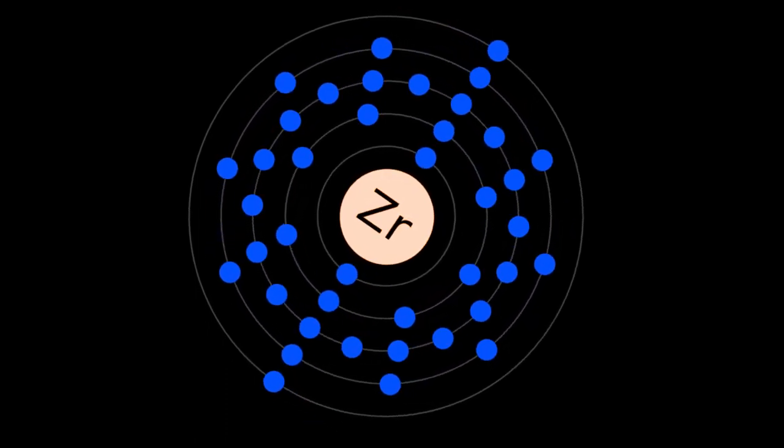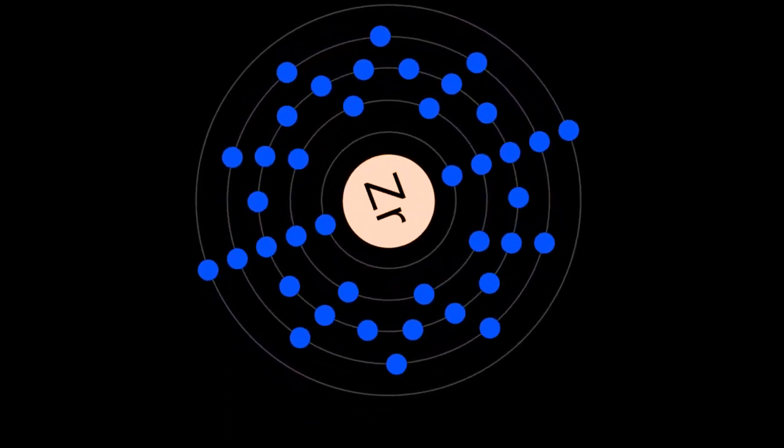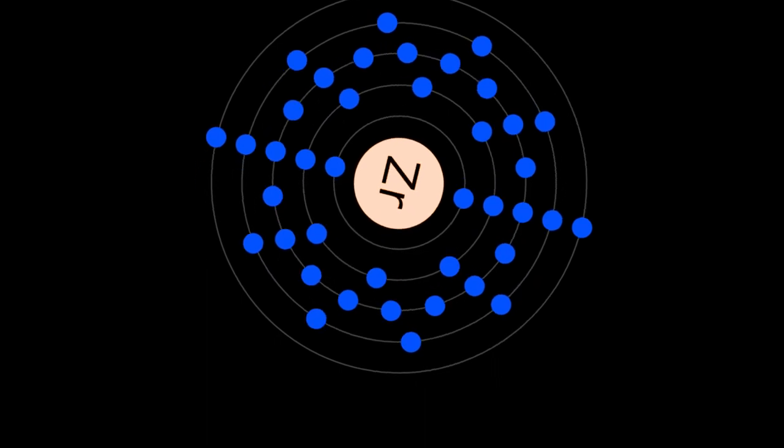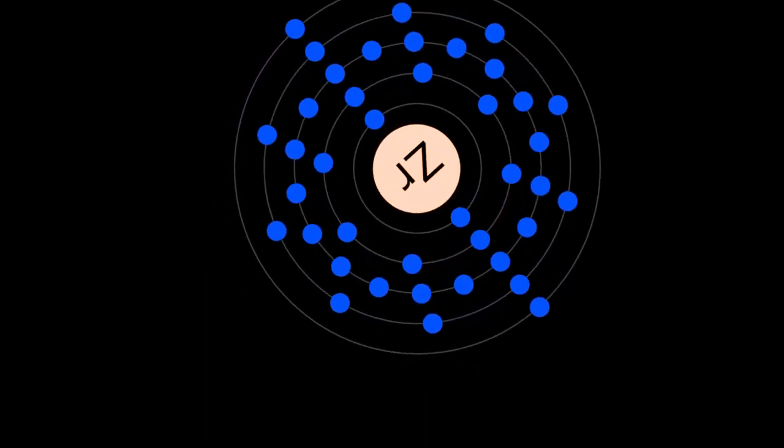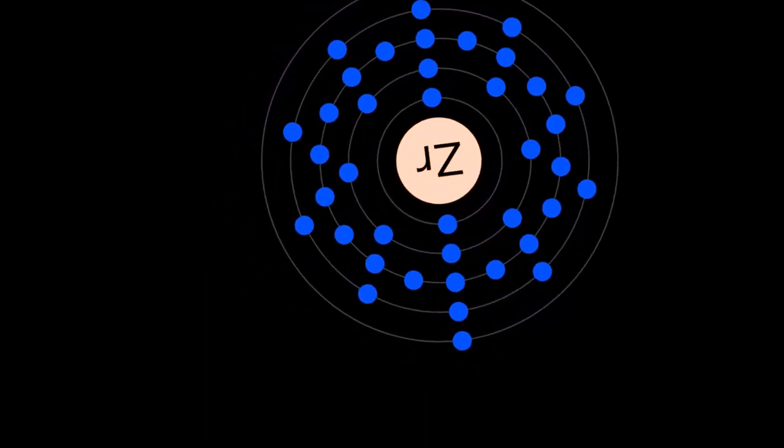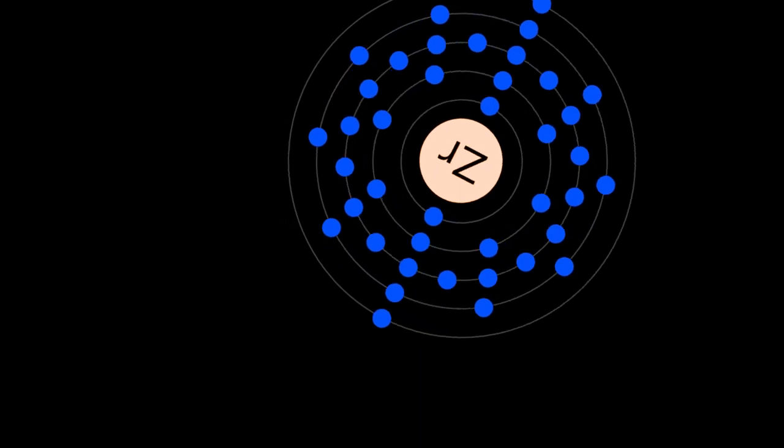Zirconium is a chemical element with symbol Zr and atomic number 40. The name zirconium is taken from the name of the mineral zircon, the most important source of zirconium.